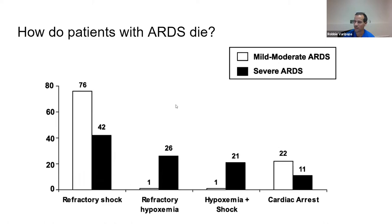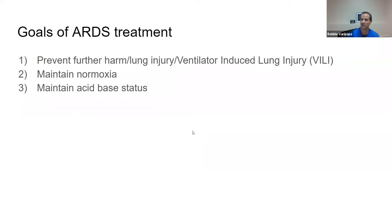We should know how ARDS patients actually die. ARDS is a very morbid condition with mortality ranging from 30 to 60%. Most patients don't die of respiratory failure — they die of shock, especially those with mild to moderate ARDS. A smaller percentage die from refractory hypoxemia.